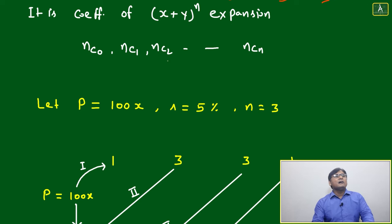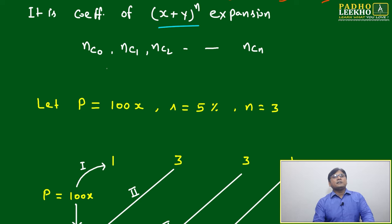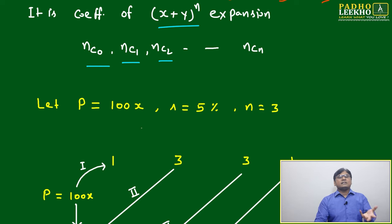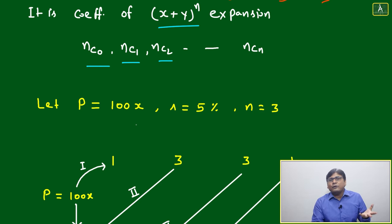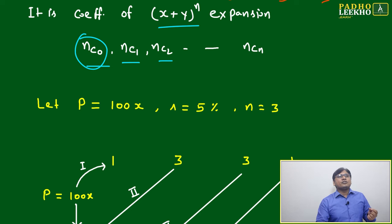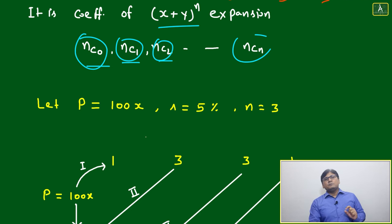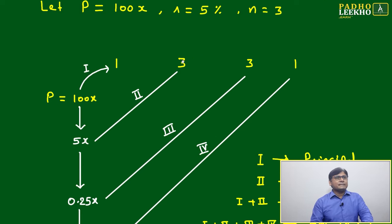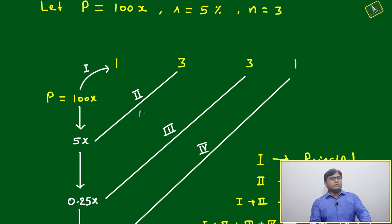We will try to understand how this works. It is a coefficient of (x+y) to the power n: nC0, nC1 — selection of 0, selection of 1 and more. That is called all coefficients of the binomial expansion — selection of 0, selection of 1, selection of 2, selection of all. This is called the binomial expansion. Now we'll see how to use it for compound interest.